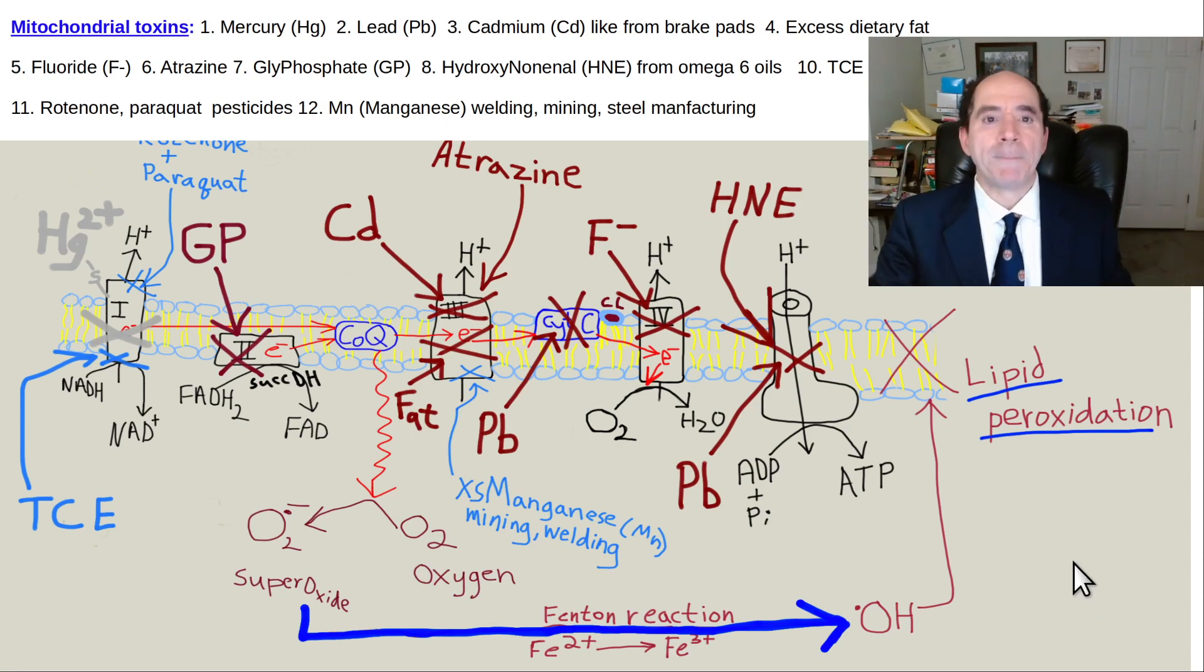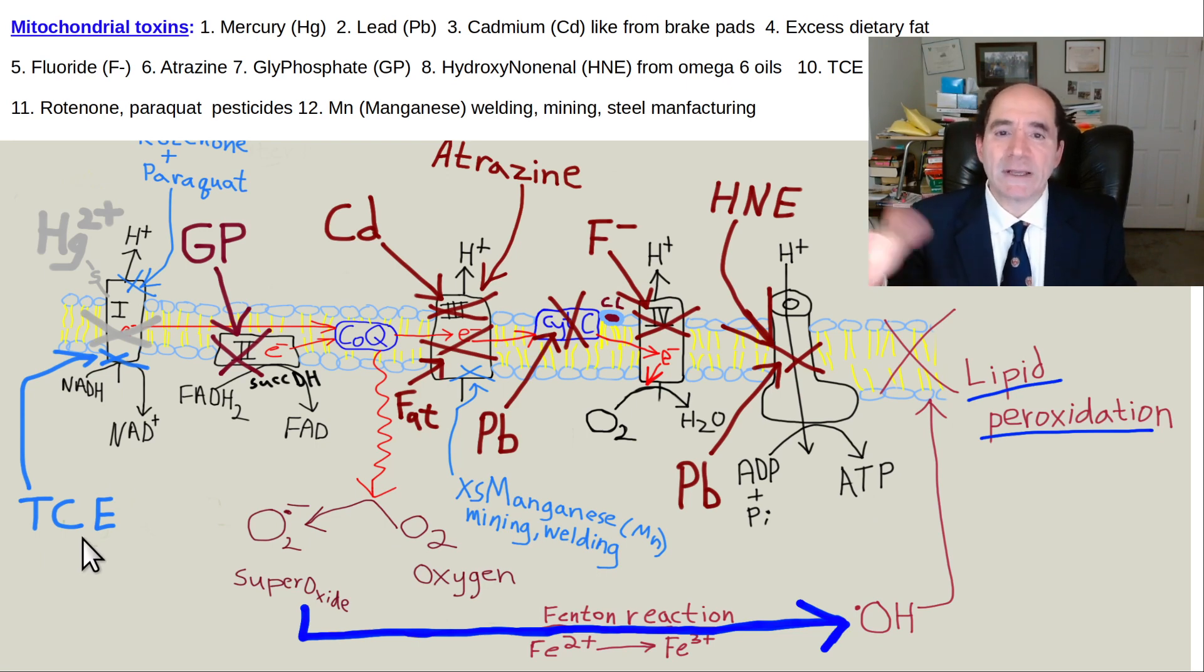This video is called Trichloroethylene: does it cause Parkinson's disease? Here's the abbreviation for Trichloroethylene, TCE. It's a chemical very commonly used for cleaning things, a degreasing agent. It's also commonly used with dry cleaning. Nowadays there's a new version of it where they added extra chloride on there.